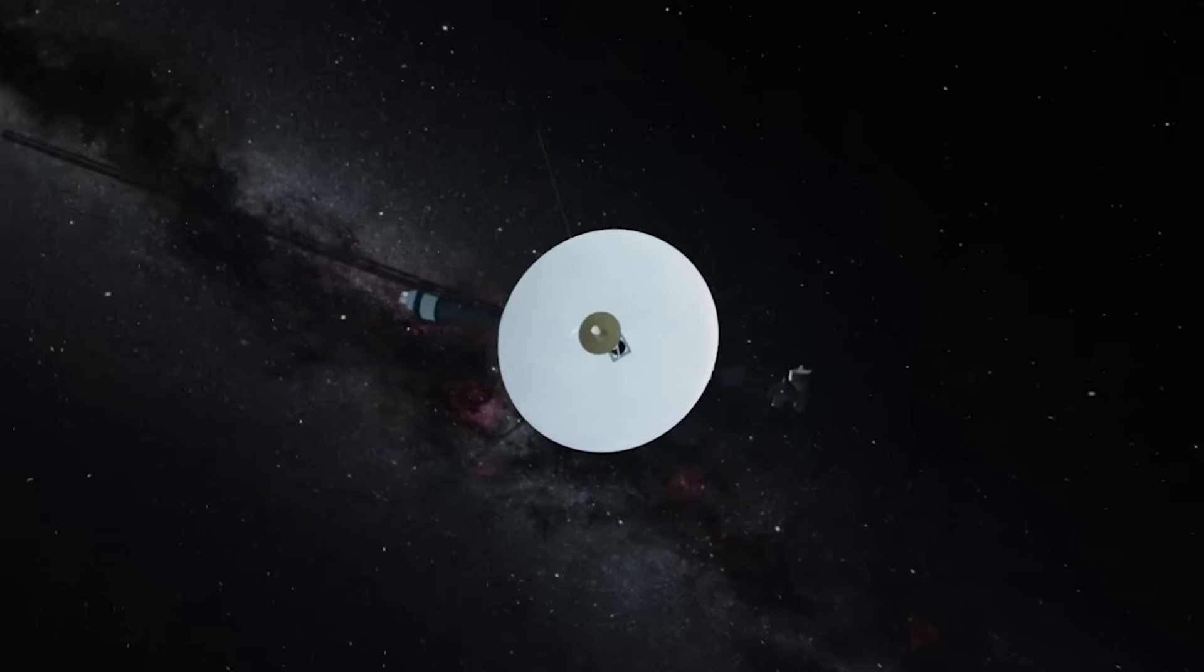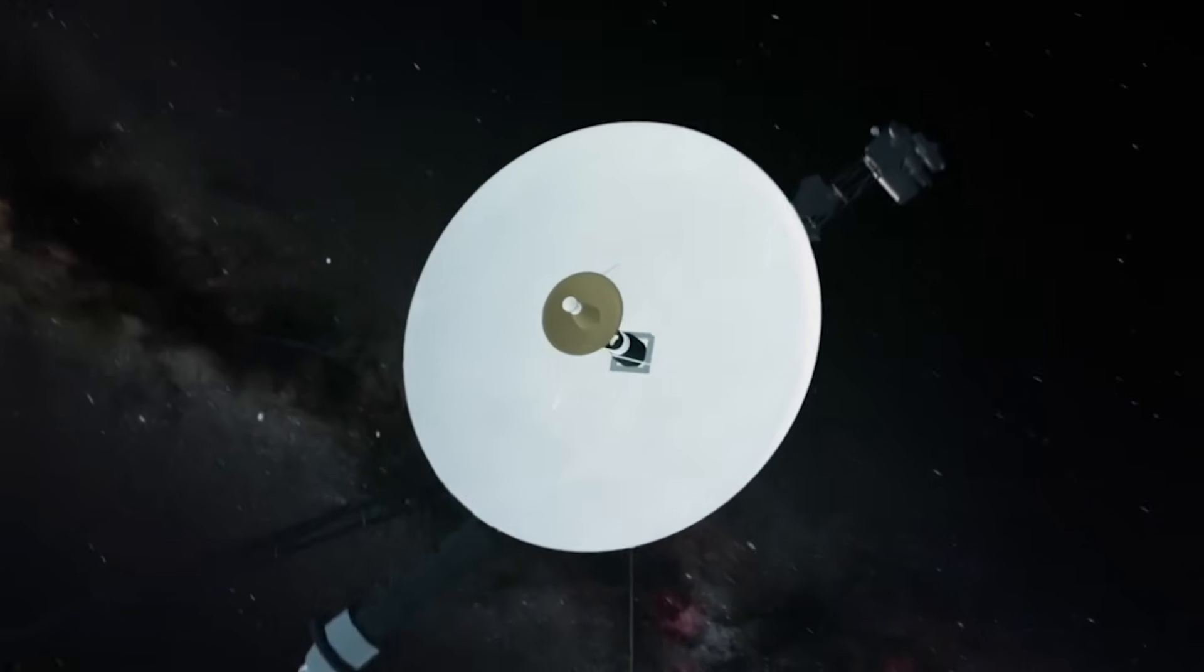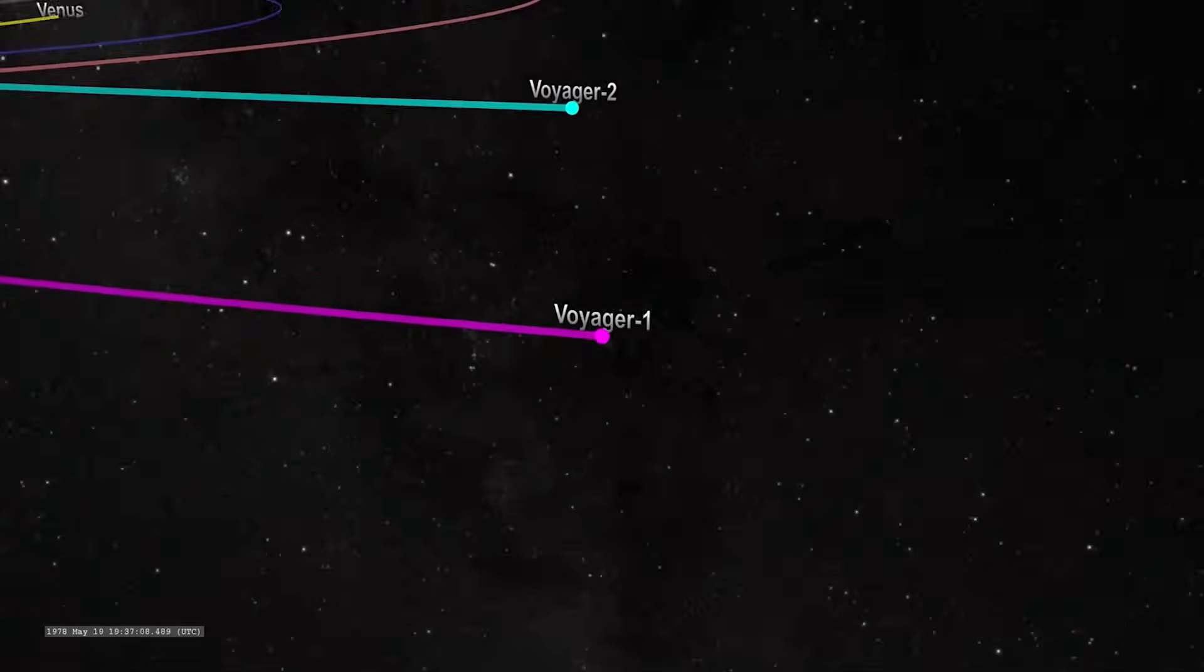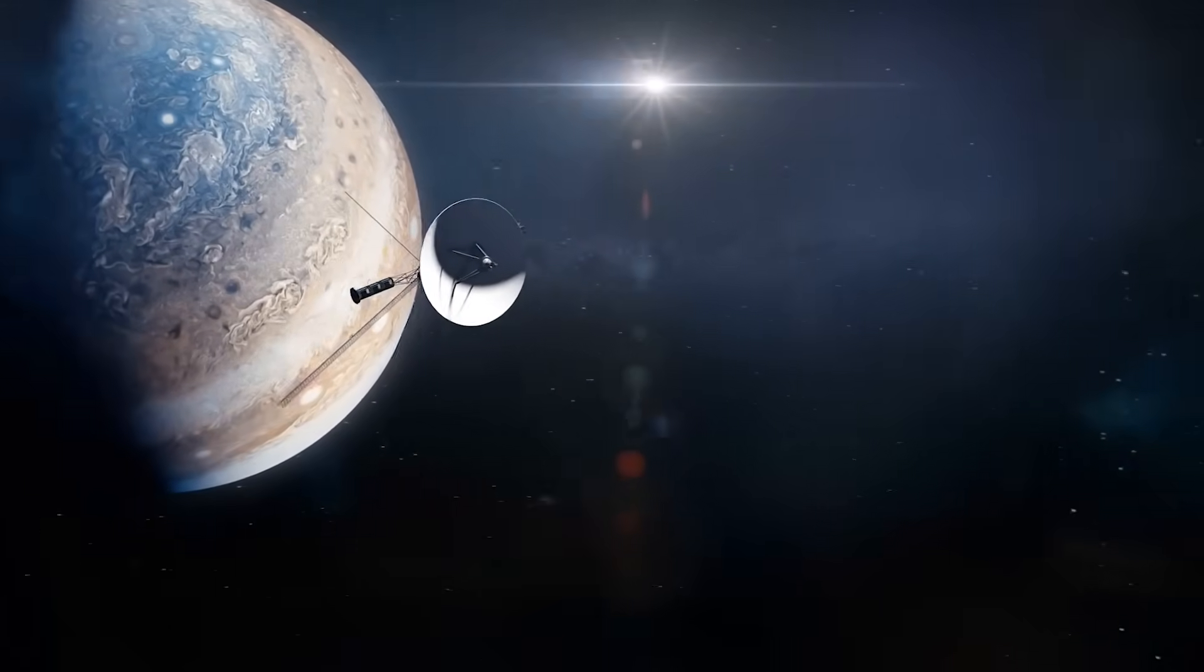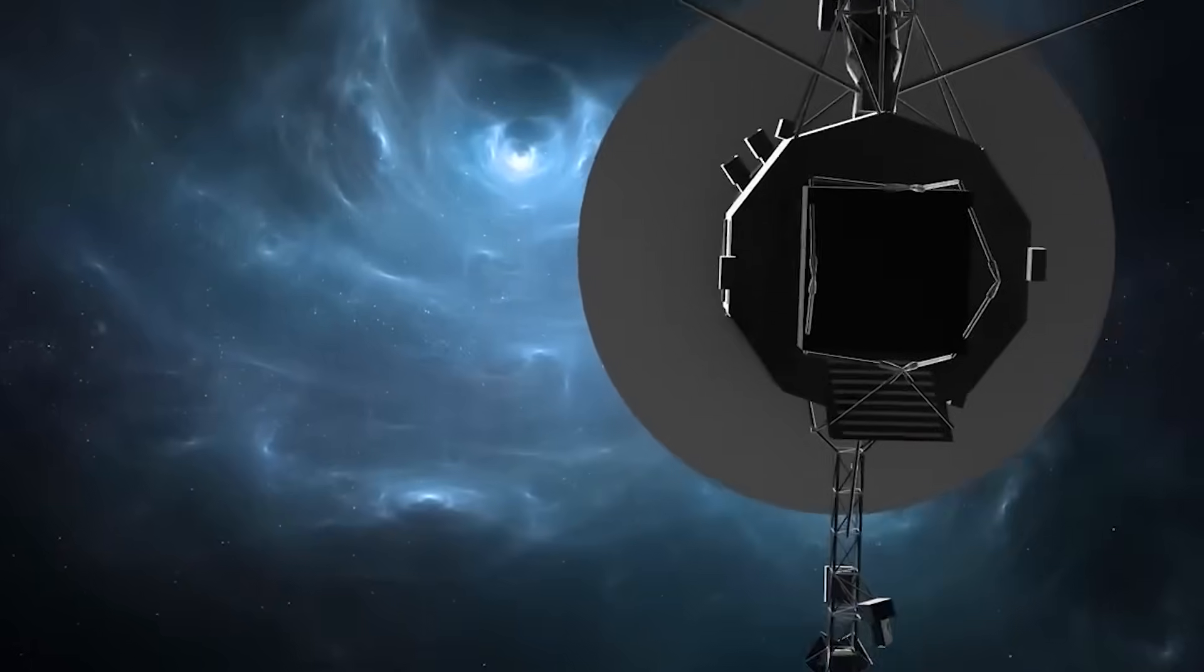Voyager 1 is not equipped to move, to turn, or to observe in high resolution. It is, for all its miraculous achievements, a passive observer. Yet now, it has become a participant in a dialogue billions of years in the making.